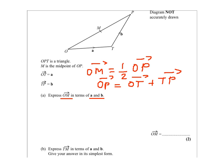Now OT equals a and TP equals b. Therefore OM equals half of a plus b.